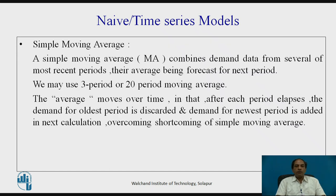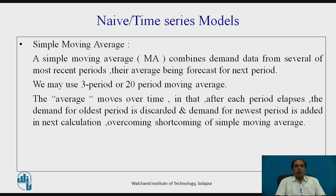A better solution is the moving average. There are two types: simple moving average and weighted moving average. Simple moving average combines demand data from several of the most recent periods, with their average being the forecast for the next period. We may use a three-period or twenty-period moving average. After each period elapses, the demand for the oldest period is discarded and the most recent period's demand is added, making it slightly better than the simple average method.